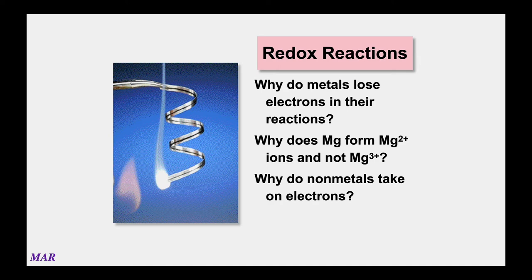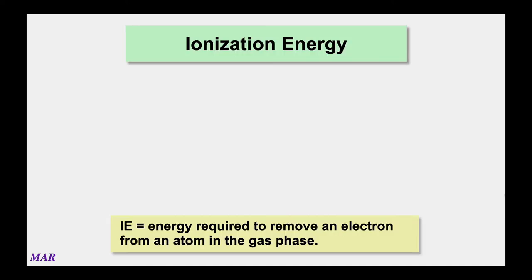A question you might have: why do metals lose electrons in redox reactions? Why does magnesium form Mg²⁺ and not Mg³⁺ or Mg⁺? Why do non-metals take on electrons? These are answered using ionization energy and electron affinity. Ionization energy is the energy required to remove an electron from an atom in the gas phase. Gas phase is used because it's easier to get data that way, though it's not always perfect.